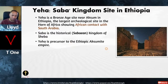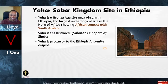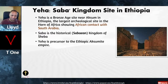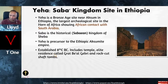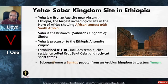Established in the 8th century BC, this site includes a temple, an elite residence called Grat Bel Gebri, and rock-cut shaft tombs. The Sabaeans were a Semitic people from an Arabian kingdom in western Yemen. Their empire flourished from the 8th century BC to approximately 275 AD. Oddly enough, this temple is known as Al-Maqqa Temple — you might notice the similarity to a certain very important place in the Islamic religion.